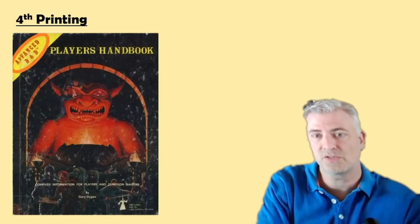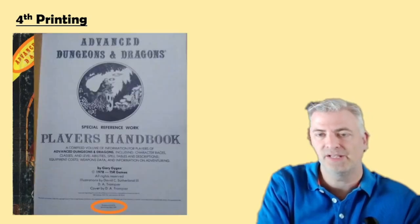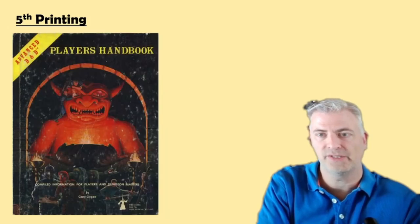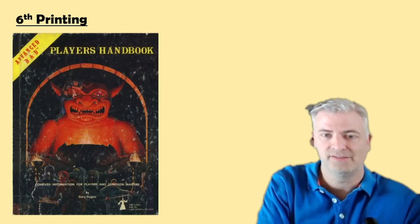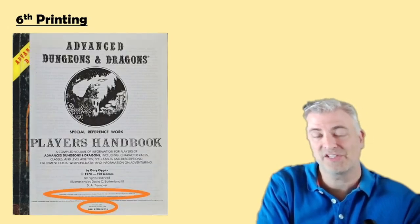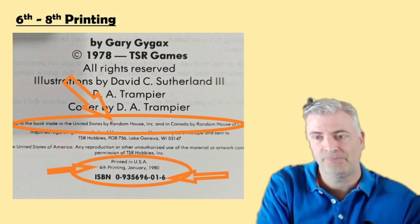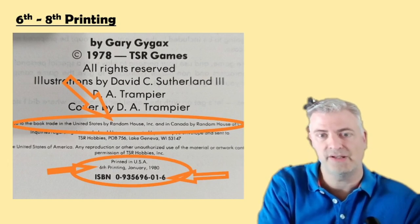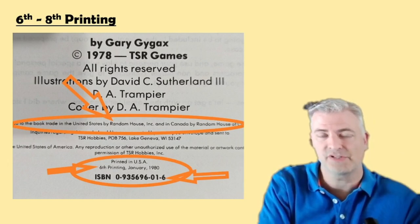The fourth printing switches to a new cover with AD&D in yellow with a trademark, and 'Player's Handbook' at the top. Inside at the bottom it says 'Fourth printing.' The fifth printing has the same cover, and the bottom now says 'Fifth printing.' The sixth printing is the same cover. At the bottom it says 'Sixth printing, January 1980,' and it now has the similar text mentioned in the Monster Manual video where the book is being distributed by Random House, plus an added ISBN number. This same copyright page text is consistent through the sixth, seventh, and eighth printings.